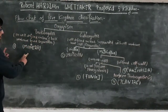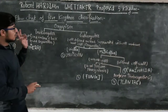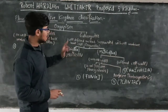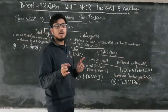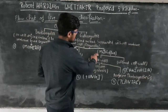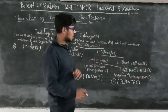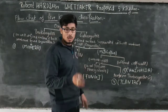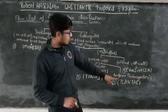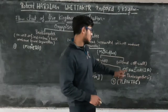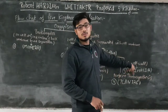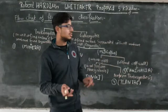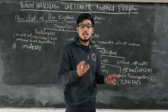Let's recall this process. First one is Monera, having no well-defined nucleus. Second is Protista, which has a well-defined nucleus and membrane-bound organelles. Third one is for Multicellular, where the two parts are Fungi — they do not perform photosynthesis — and Plantae, which does perform photosynthesis. And the last kingdom is called Animalia; they are not able to perform photosynthesis because they do not have the cell wall.